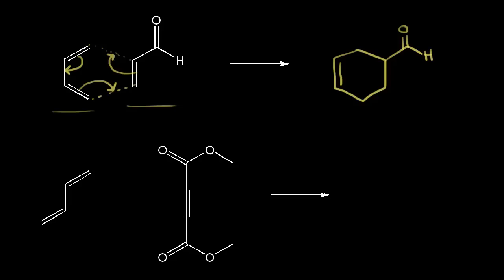Following our electrons using the same colors as before: the red pi electrons move over here to form this bond; the blue pi electrons move into here to form this bond; and finally the magenta pi electrons move into here to form this bond. All six pi electrons move at the same time in this one-step reaction.